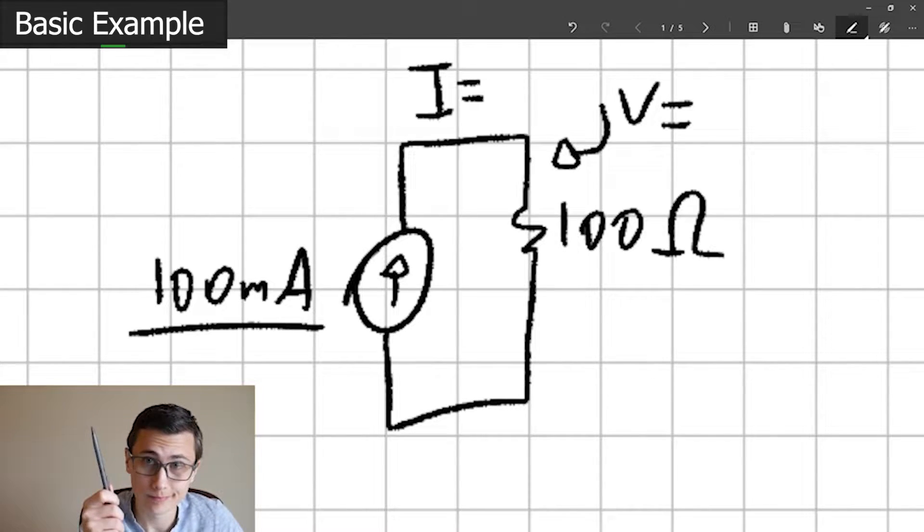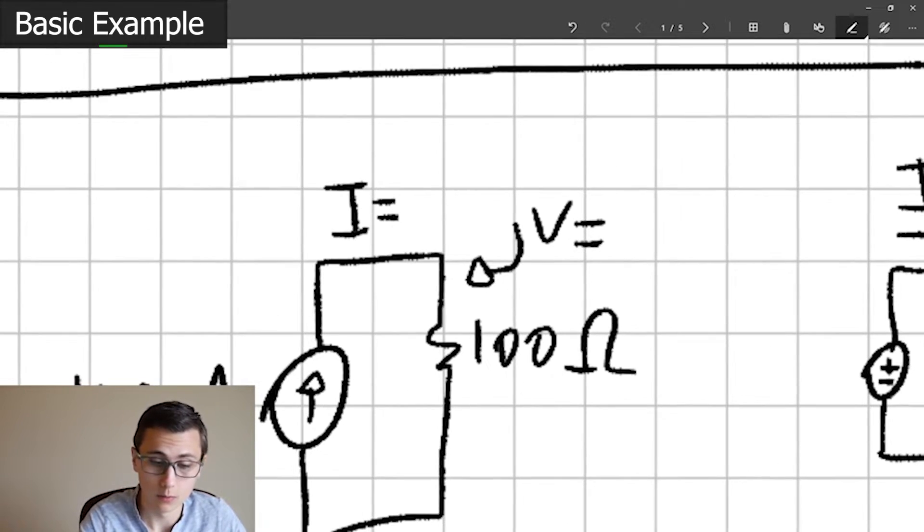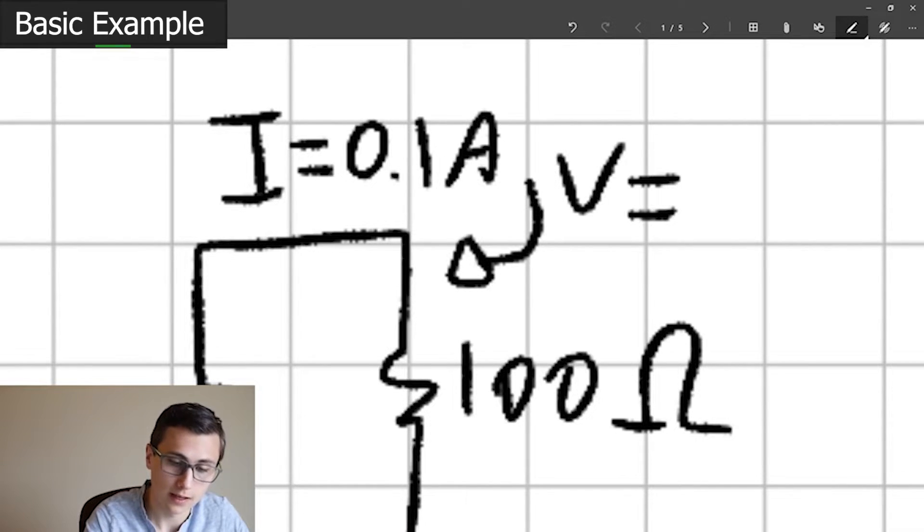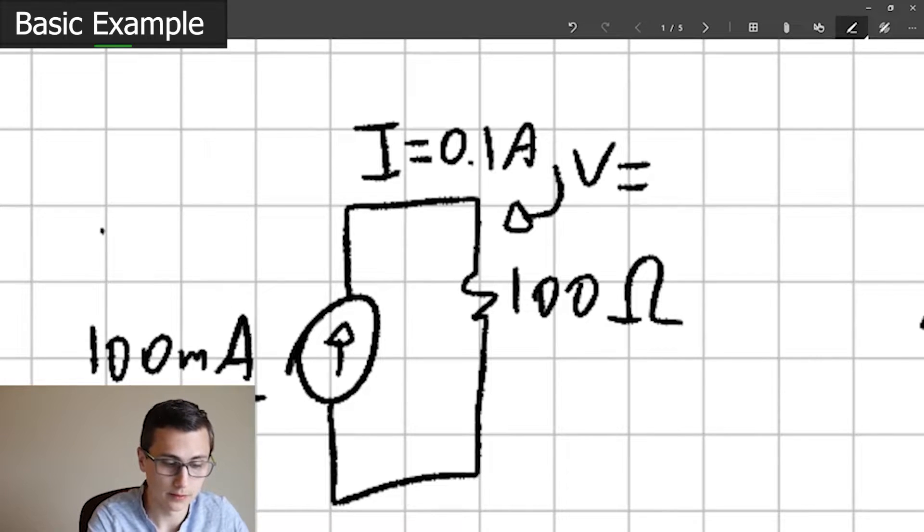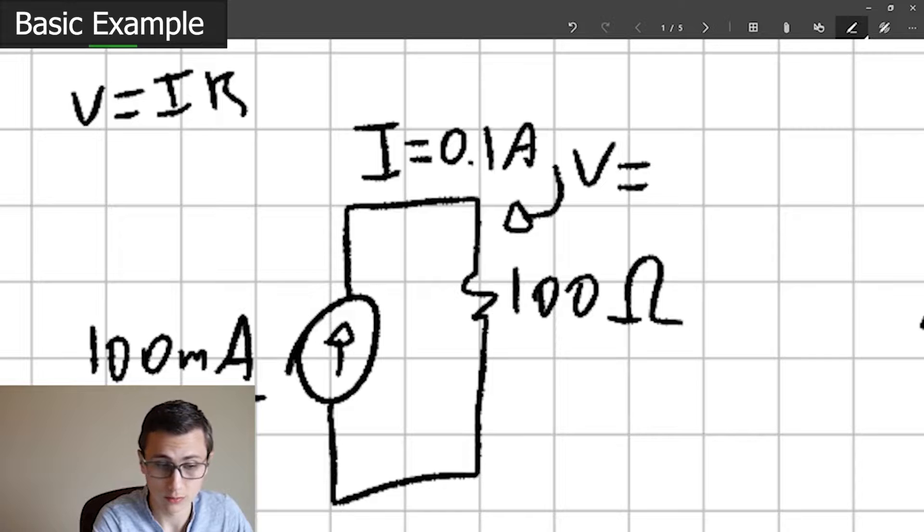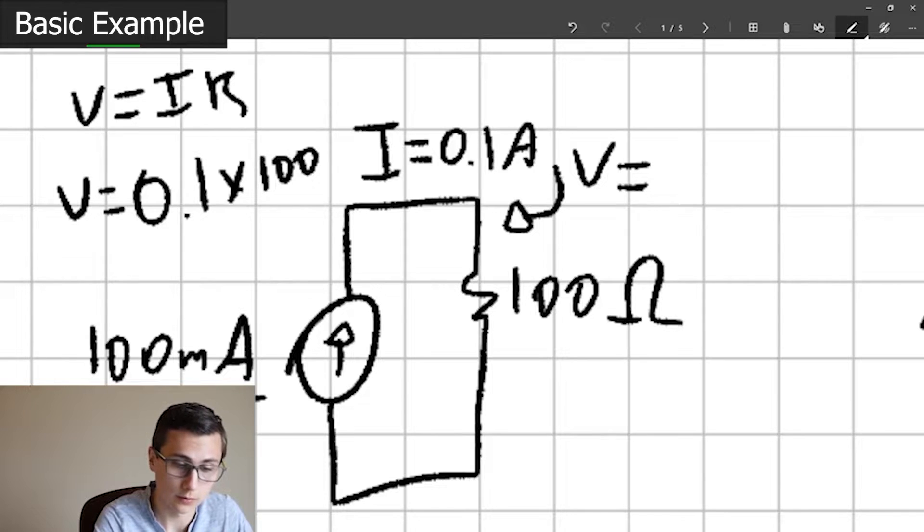Well, if we have one ohm, one amp is one volt. Wait, I jumped ahead. We have 0.1 amps, right? Because 100 milli times 1000, you end up with 0.1. We know Ohm's law, V equals I times R. So if we know R and we know I, V equals 0.1 times 100, which is equal to 100 divided by 10. V equals 10 volts.